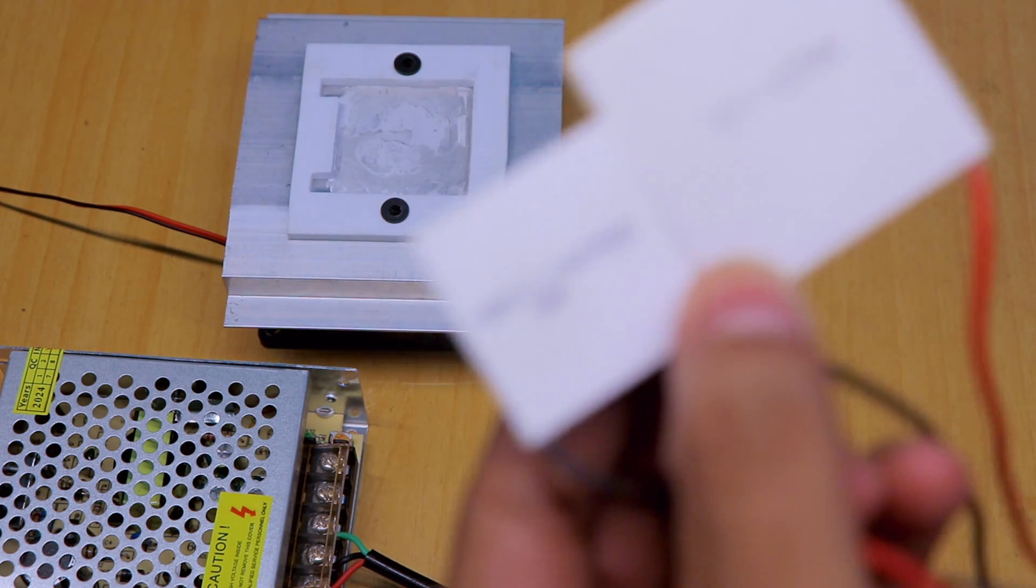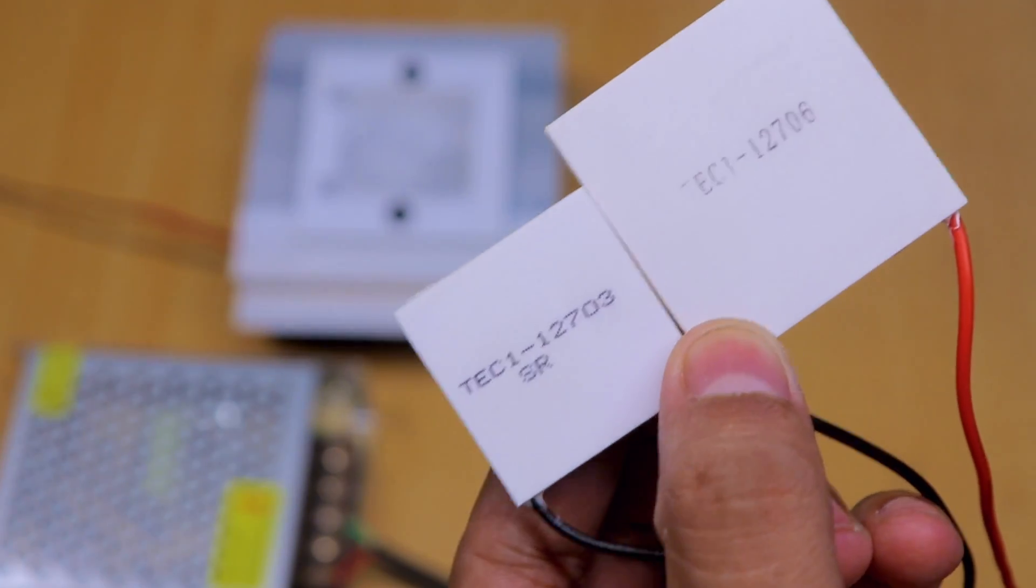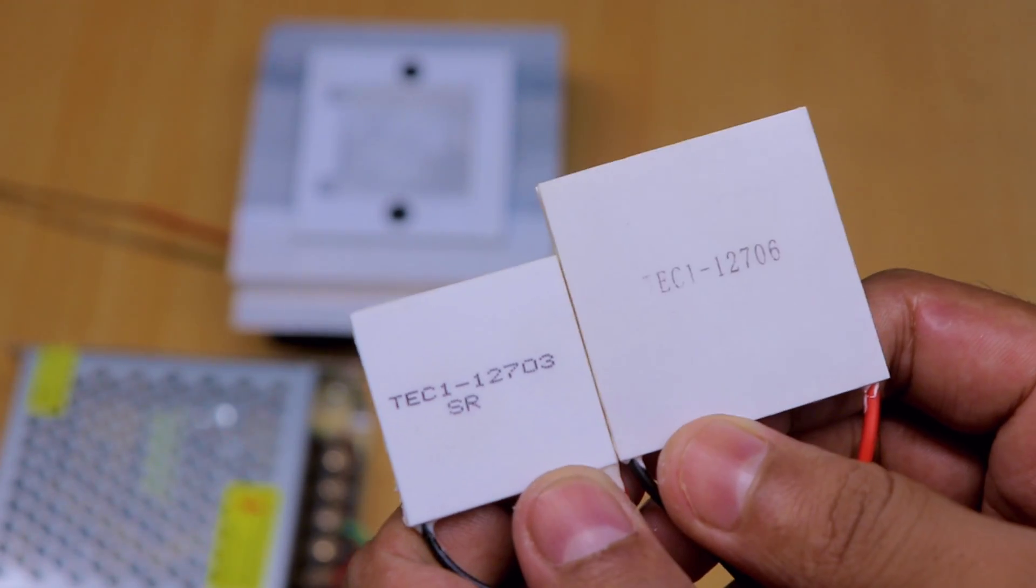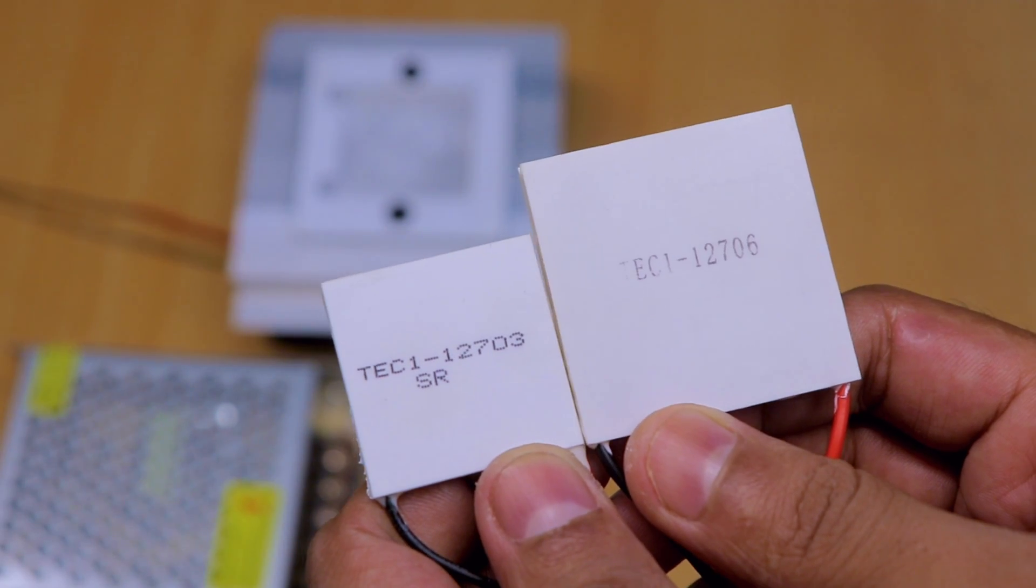One is 12703 and the other one is 12706. Today I am going to test which Peltier module gives the best cooling performance.